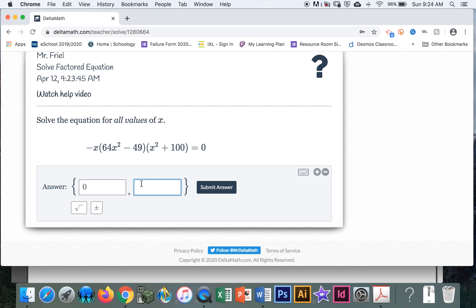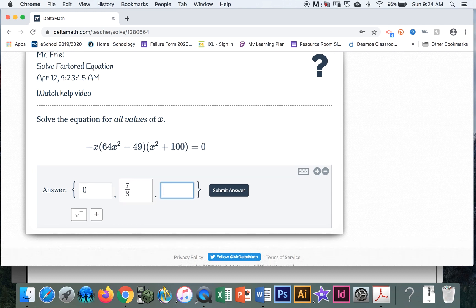So my one answer is going to be 7 eighths. My other answer is going to be negative 7 eighths. Then I got x squared plus 100 equals zero. Set that equal to zero. x squared equals negative 100. Square root of negative 100. Plus or minus 7i. I'm sorry. Plus or minus 10i.